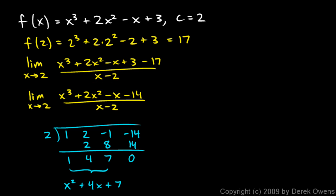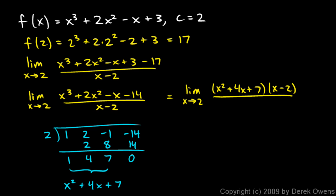So the polynomial factors as (x squared plus 4x plus 7)(x minus 2). The limit becomes the limit as x approaches 2 of (x squared plus 4x plus 7)(x minus 2) over (x minus 2), and the (x minus 2) factors cancel.